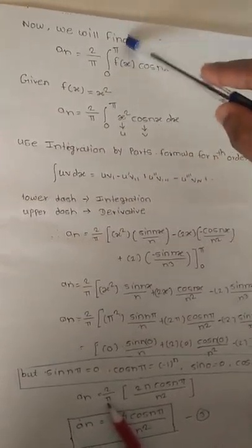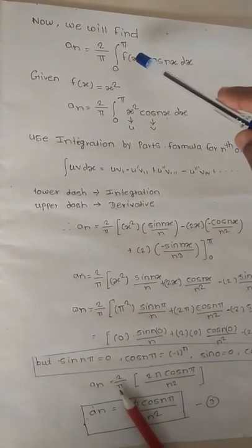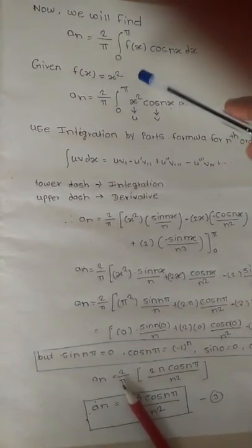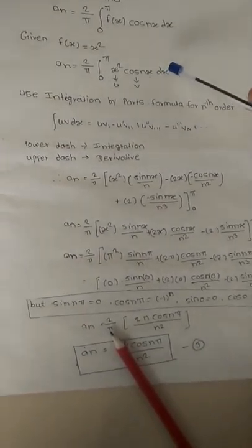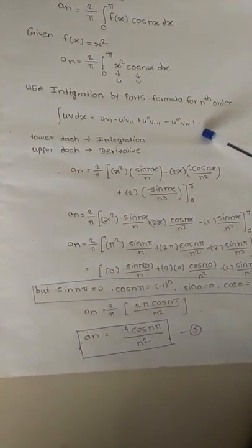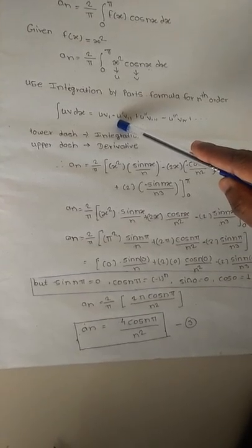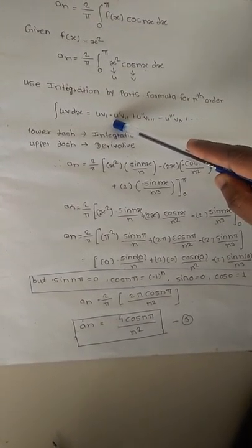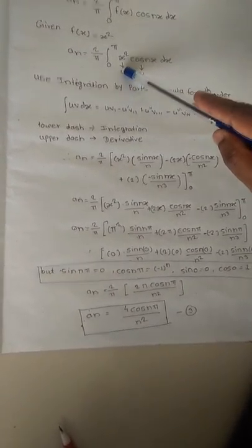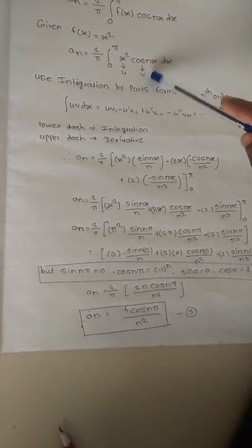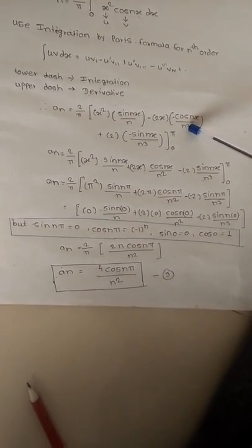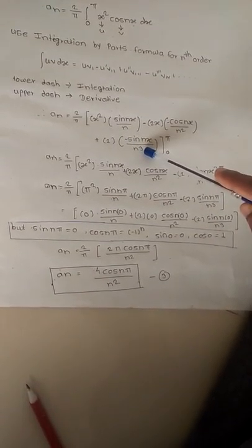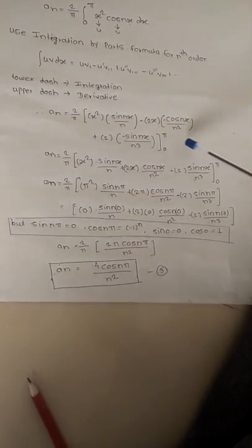Next, we find the value of aₙ, which is 2 by pi, integral 0 to pi of f(x) cos(nx) dx. Substituting f(x) equals x square gives aₙ equal to 2 by pi, integral 0 to pi of x square cos(nx) dx. Here we apply the integration by parts rule for nth order, taking u equal to x square and v equal to cos(nx). Upper dash indicates the derivative and lower dash indicates the integration. This gives: first function as is, minus derivative of first times integral of second, plus second derivative of first times second integral of second, and so on.